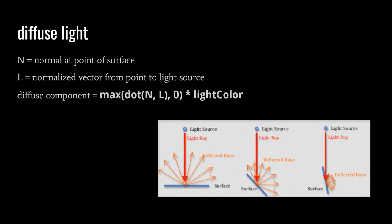For this computation we need both N and L either both in world space or both in view space. For our examples we'll use world space. The light position is already in world space; for each fragment we also need its world space coordinate. In the vertex shader we output both the clip space coordinate for gl_Position and a world space coordinate, which is then interpolated per-fragment so we can compute L in the fragment shader.